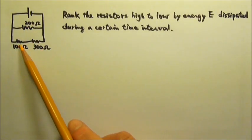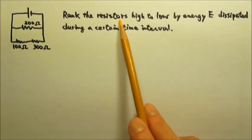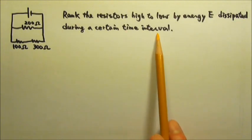In this circuit, we have three resistors connected to a battery, and we want to rank the resistors from high to low by energy dissipated during a certain time interval.